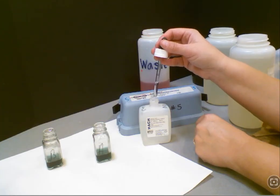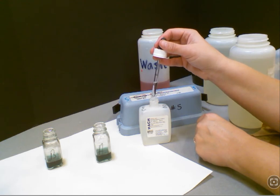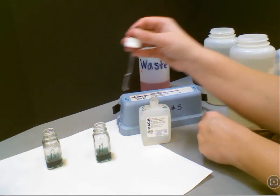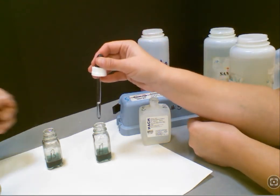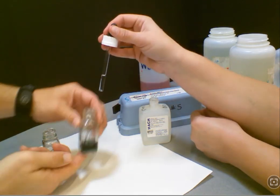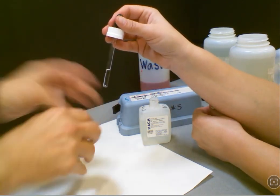So now we're ready to titrate both our sample A and B, and this is helpful to have your group at this point. One student can swirl, another student can drop, and then the other students can help count. It's very important that you keep track of the drops.